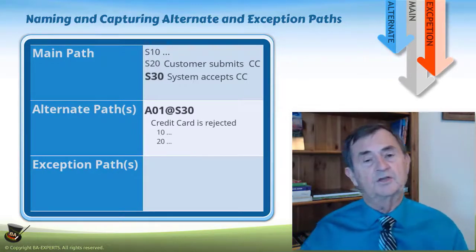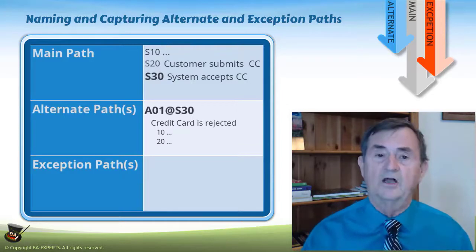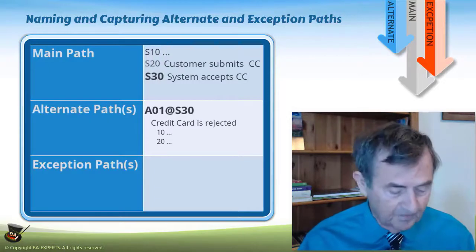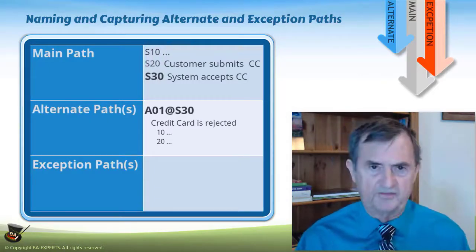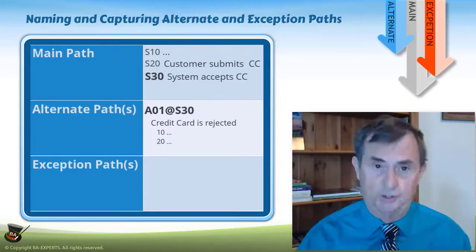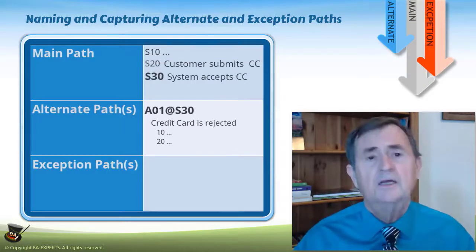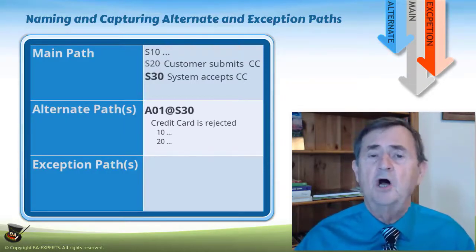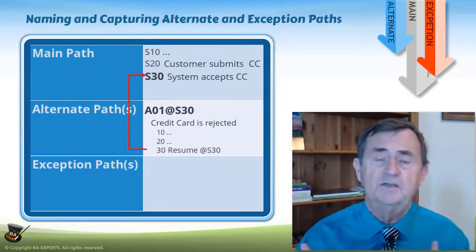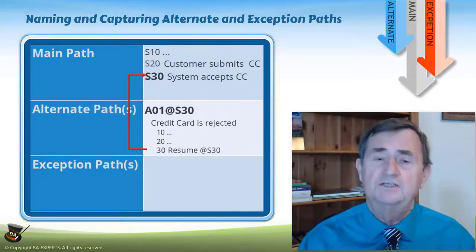I then have all the steps of the alternate path, which are just like a standard path — a dialogue where the actor does something, the system does something, back and forth. At the end of the alternate path, I identify where in the path I came from to return to. For example, if I came out of the standard path at S30 and allowed the customer to submit an alternate credit card, I would say 'resume at S30.' This tells the developer exactly where in the standard flow the process returns.